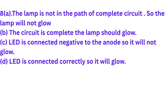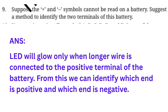Question number nine: Suppose the plus and minus symbols cannot be read on a battery. Suggest a method to identify the two terminals. Answer: An LED will glow only when its longer wire is connected to the positive terminal of the battery. From this we can identify which terminal is positive and which is negative.